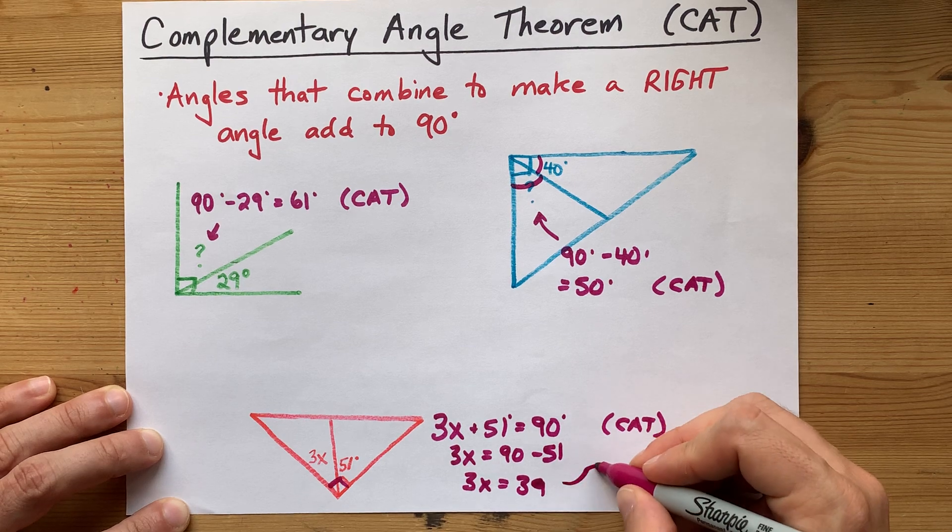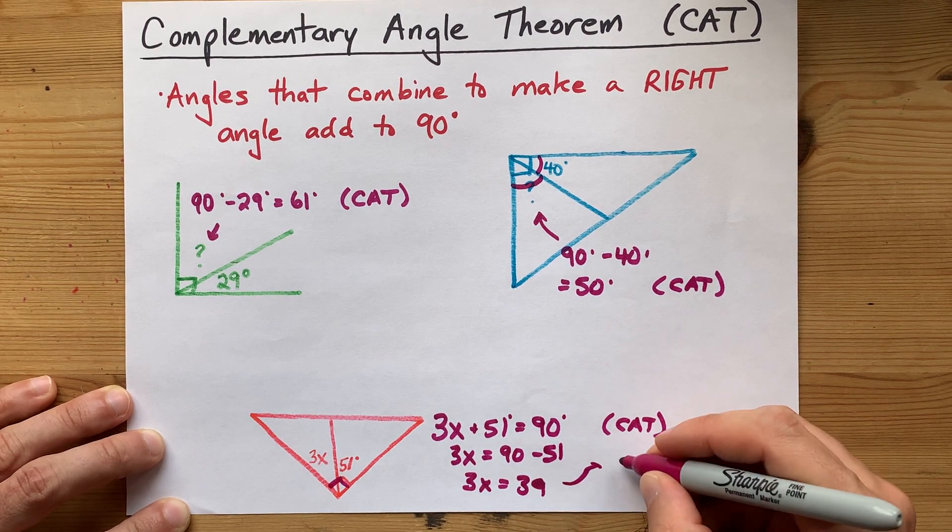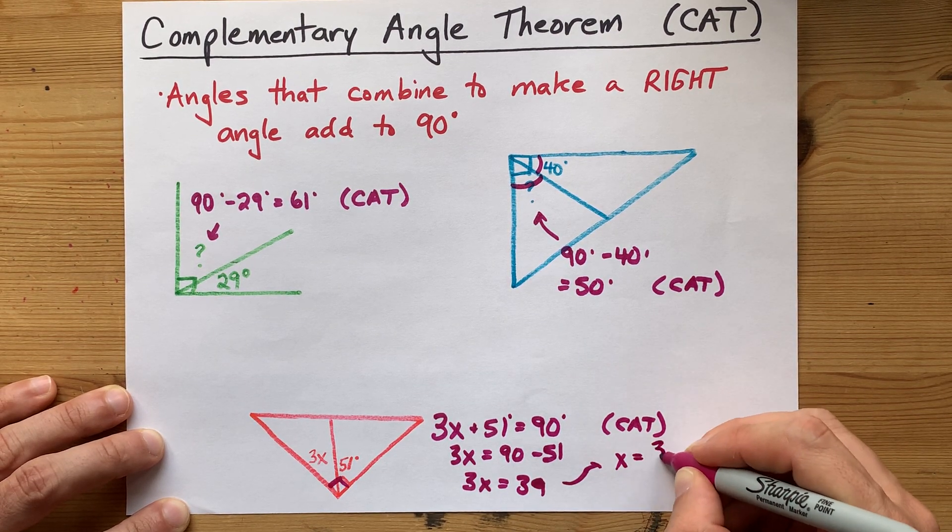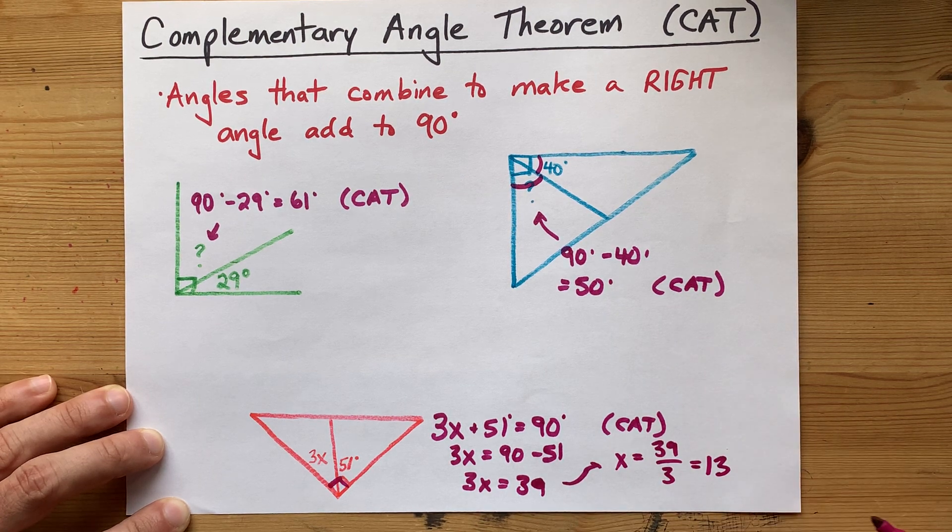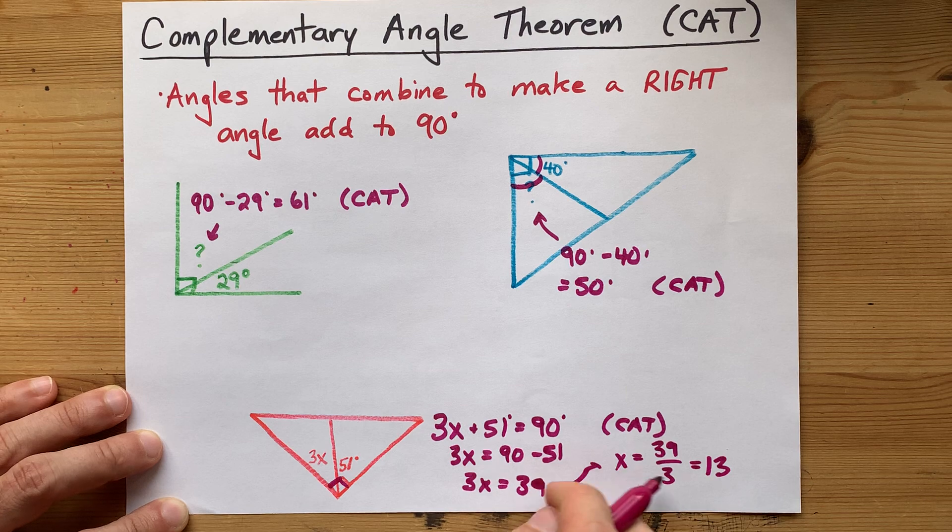In order to solve that, I can divide both sides by 3. 39 divided by 3 is just 13. Oh, so x was 13.